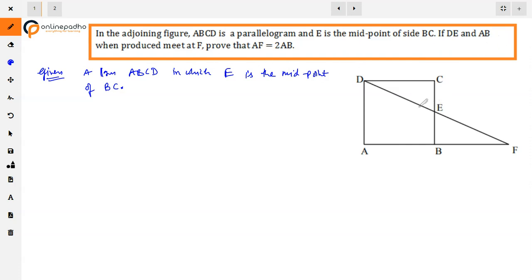In parallelogram ABCD, E is the midpoint of side BC. DE is extended and AB is produced outward, meeting at point F. We need to prove that AF is two times AB. To prove: AF is equal to 2AB.